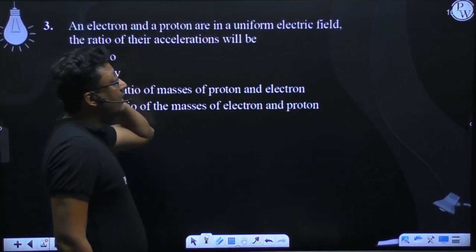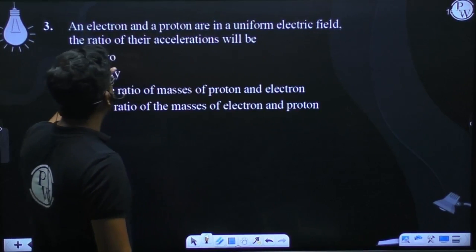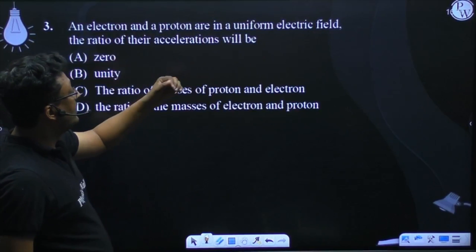An electron and a proton are in a uniform electric field. The ratio of their accelerations will be: